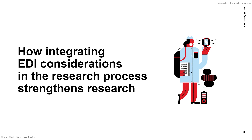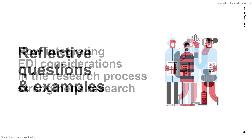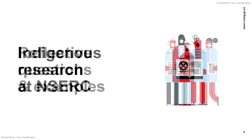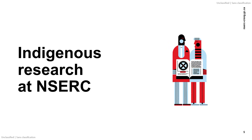In Part 1, we will begin by explaining how the integration of EDI considerations throughout the research process strengthens research. In Part 2, we will show some examples and provide key reflective questions that can assist in strengthening your own research. And finally, in Part 3, we will highlight important, distinct considerations for research involving or affecting Indigenous peoples, communities, organizations, and Indigenous lands.